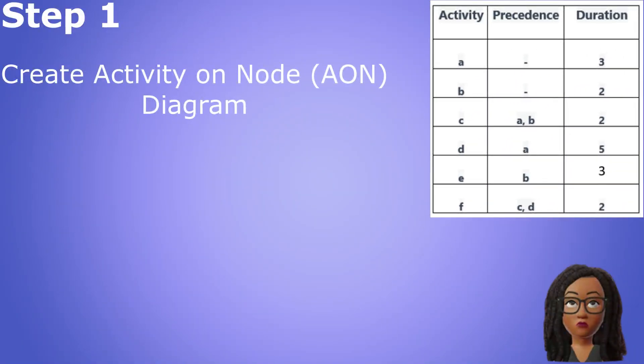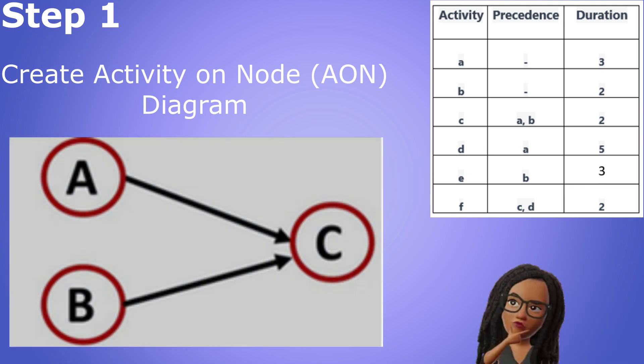Step one involves creating an activity on node or AON network diagram to represent the project. An activity on node diagram is one in which the activities are represented by the nodes, while the arrows show what activities come next.